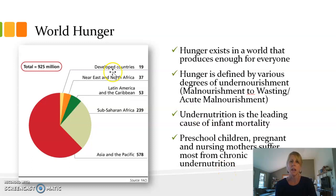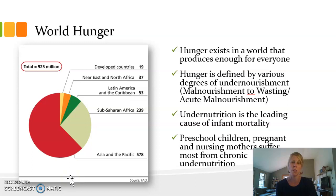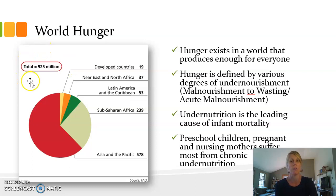The numbers on world hunger differ slightly depending on the organization you look at. From your reading, the World Health Organization has the current tally — at least from 2019 — at around 821 million people in the world facing chronic hunger. The Food and Agricultural Organization within the United Nations has a slightly higher number. The 2020 data might actually be higher than even 900 million people in the globe suffering with undernourishment or chronic hunger.